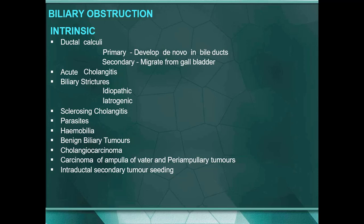Biliary obstruction causes can be intrinsic or extrinsic. Intrinsic ductal calculi primarily develop de novo in the bile duct, which is very rare. The most common reason for calculi in the common bile duct is choledocholithiasis — stones migrated from the gallbladder. Other intrinsic causes include acute cholangitis, biliary strictures that are idiopathic or iatrogenic, sclerosing cholangitis, parasites, hemobilia, benign biliary tumors, cholangiocarcinoma, carcinoma of the ampulla of Vater, peri-ampullary tumors, and intraductal secondary tumor seedings.